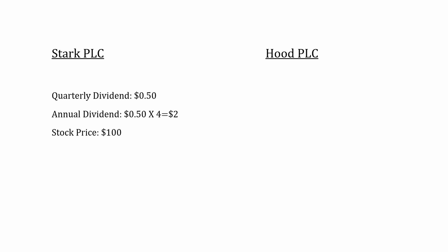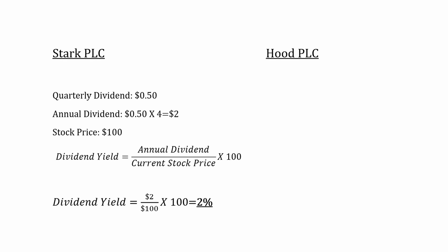Let's give an example. Say we have two companies: Stark PLC and Hood PLC. Stark PLC pays a quarterly dividend of 50 cents, making its annual dividend $2, and it has a stock price of $100. If we calculate Stark PLC's dividend yield by dividing its annual dividend by the stock price, we find that it has a yield of 2%, meaning you're going to get 2% of your investment paid back to you in dividends annually.